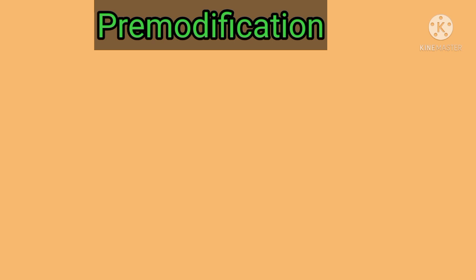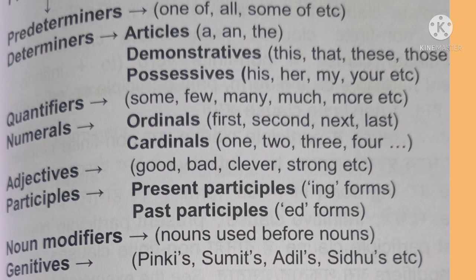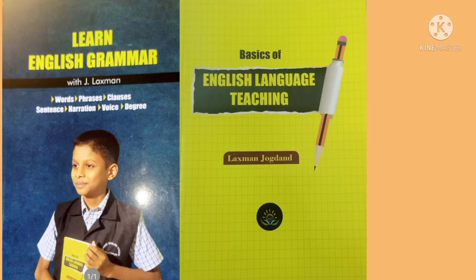The structure of a noun phrase includes a head, pre-modification, and post-modification. Now let us understand what words or groups of words can form the pre-modification part. The pre-modification part of a noun phrase consists of pre-determiners, determiners, quantifiers, numerals, adjectives, participles, noun modifiers, and genitives. Pre-modification is the part of a noun phrase that precedes its head, meaning pre-modifiers come before the head.